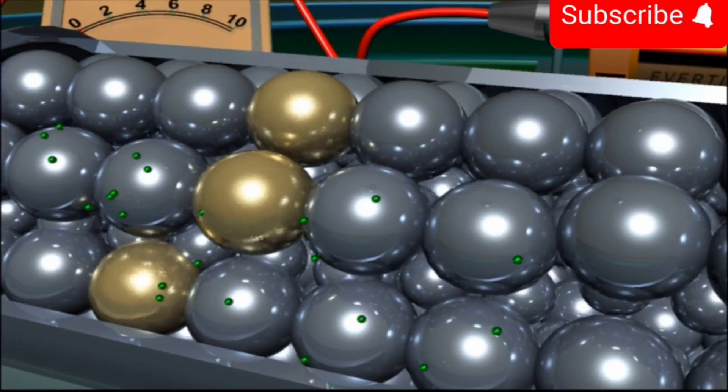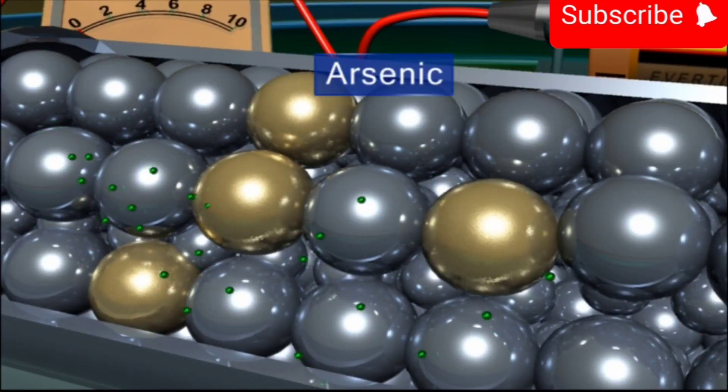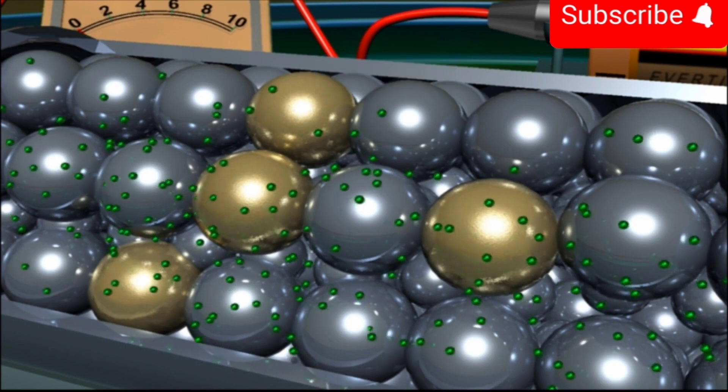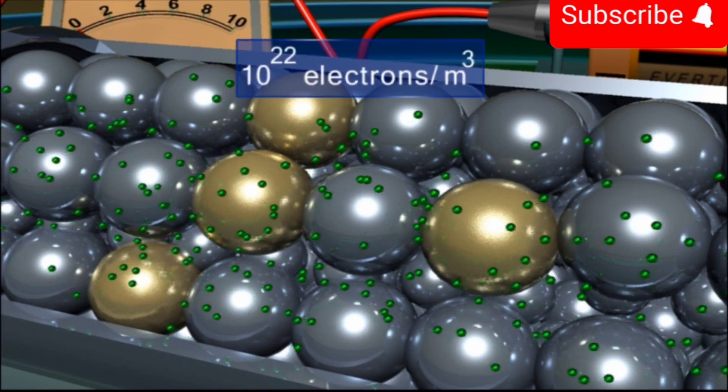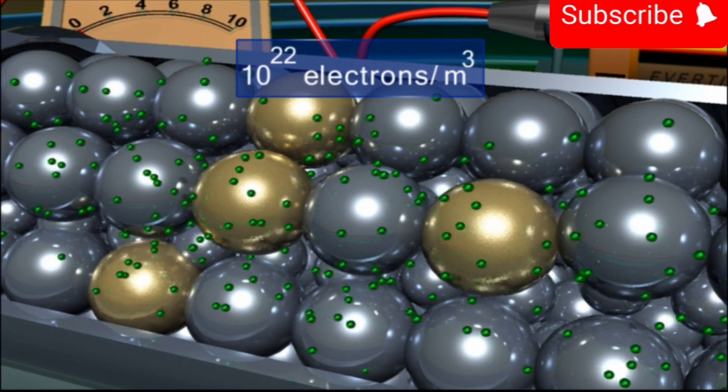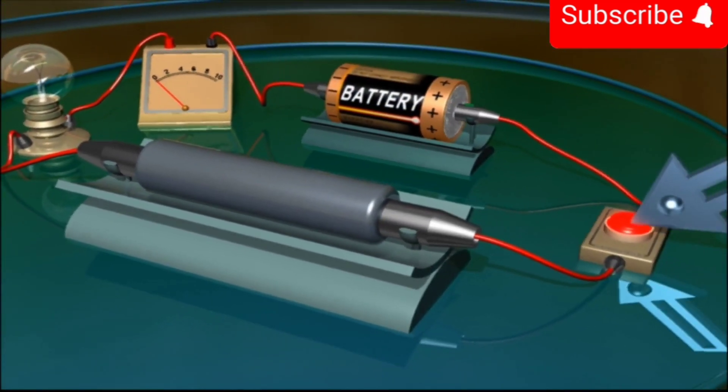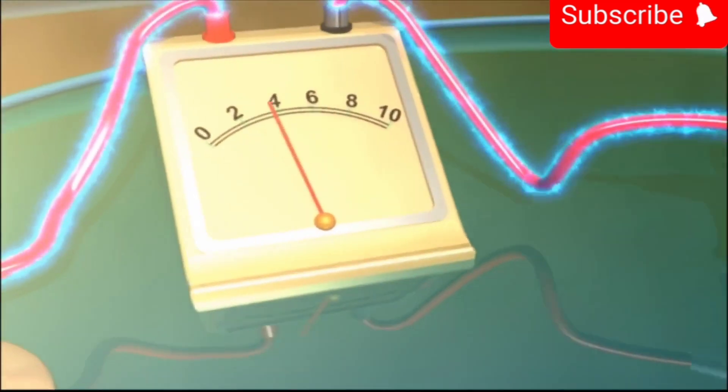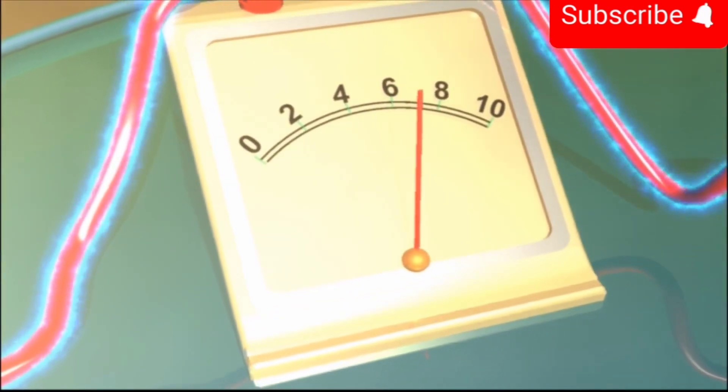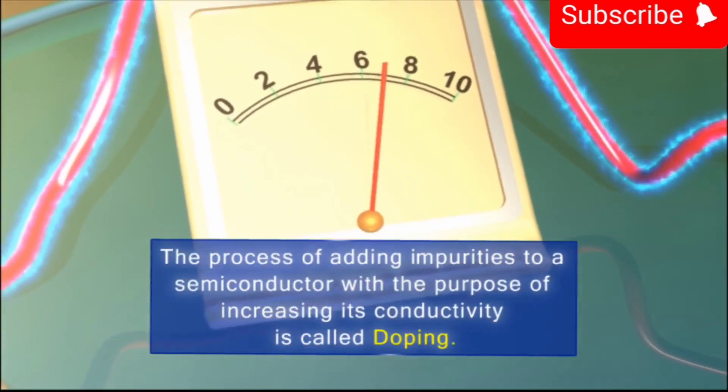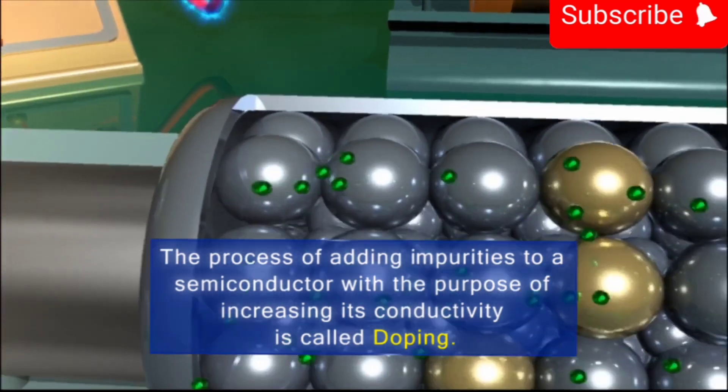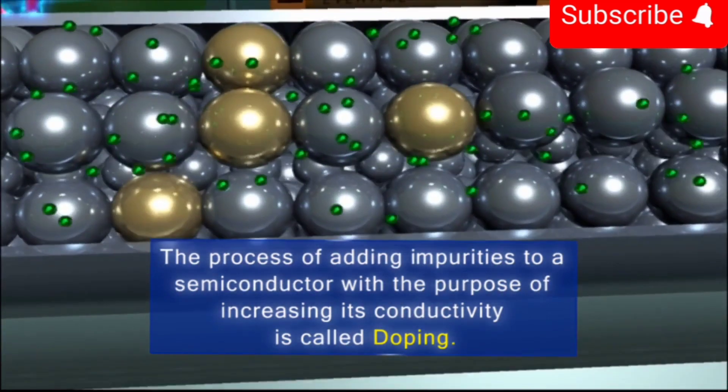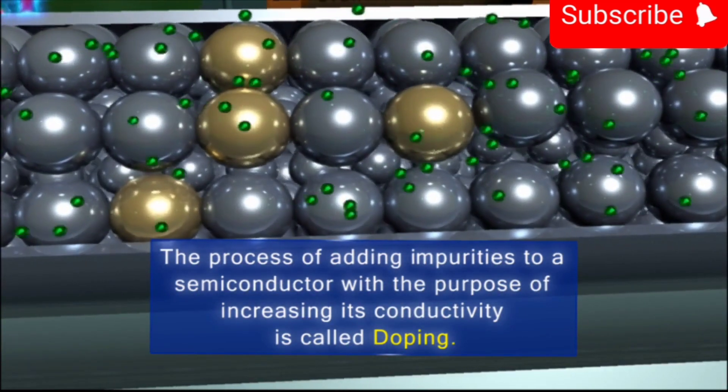However, on adding certain impurities like arsenic to this substance, the number of free electrons increases to about 10 to the 22 electrons per meter cube. In this way, the conductivity of a semiconductor can be increased. This process of adding impurities to a semiconductor with the purpose of increasing its conductivity is called doping.